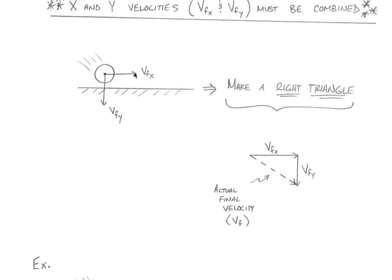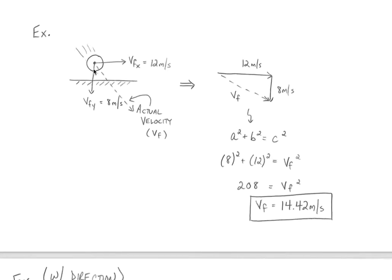If an object is moving forward and down at the same time, the projectile is probably moving downward at an angle as it strikes the ground, and that's exactly what the hypotenuse gives us. As an example, let's say this projectile is moving 12 meters per second to the right and 8 meters per second down. Combining those two using Pythagorean theorem — a squared plus b squared equals c squared — with a and b being 8 and 12, I get 8 squared plus 12 squared equals c squared, and the final velocity works out to about 14.42 meters per second.